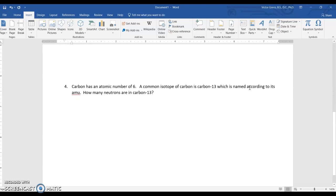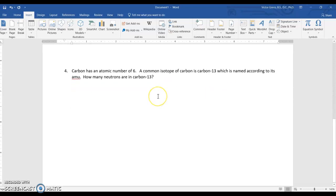One final type of question is an isotope question, and I'll read it. Carbon has an atomic number of 6, so what do we know right off the bat? How many protons there are? There are 6. A common isotope of carbon is carbon-13, and it's named according to its mass, atomic mass units.